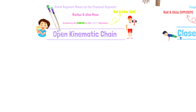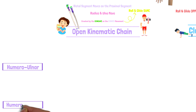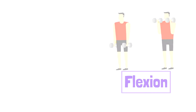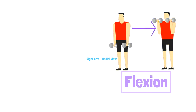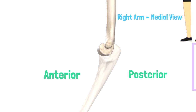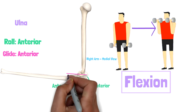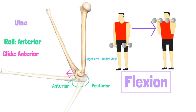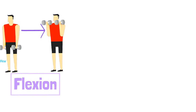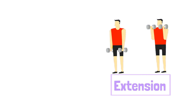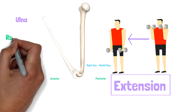Let's start with the open kinematic chain movement and examine the humeral ulnar arthrokinematics. Flexion is the first osteokinematic movement we will look at. Since we observe a concave trochlear notch moving around the convex trochlea, the roll and the glide will occur in the same direction. With flexion, observe the ulna roll and glide in the anterior direction. With extension, observe the ulna roll and glide in the posterior direction.